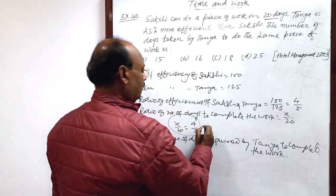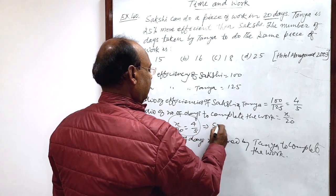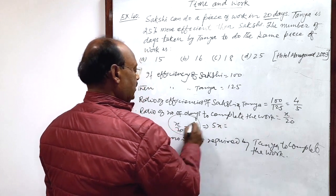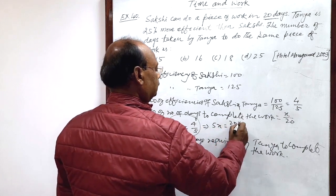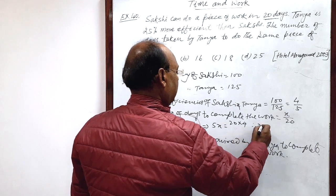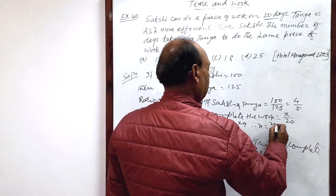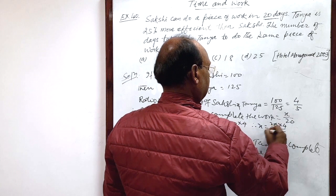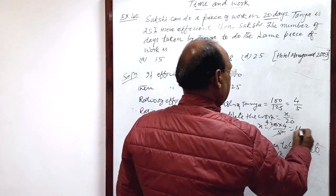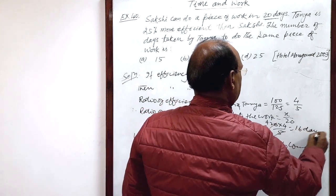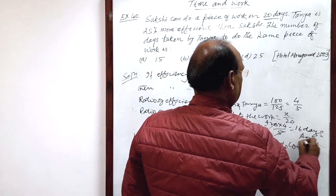By cross multiplication, 5x is equal to 20 into 4. And therefore, x is equal to 20 into 4 divided by 5. This is equal to 16 days. This is the answer.